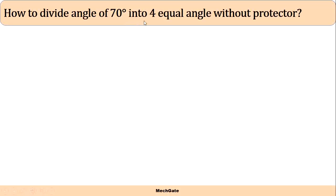Now let's see how to divide an angle of 70 degrees into four equal parts without a protractor. Many times you also have to divide a particular angle into some equal number of parts. We know how to bisect an angle — if you haven't watched that video, click on the link and watch it before continuing.